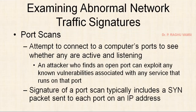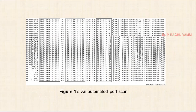Next one is port scans — which port is open, which port is closed, which port has which service, and service versions. An attempt to connect to a computer's ports to see whether any are active. An attacker who finds an open port can exploit any known vulnerabilities associated with it. Signatures of a port scan typically include synchronous packets sent to each port on an IP address. The request is coming from 192.168.1.110 to 132 — all requests are coming from 110 to 132 only, but on different ports. One, two, three, four, five, up to 31.